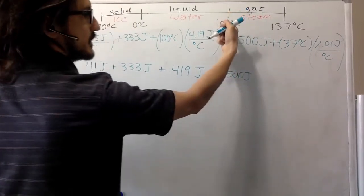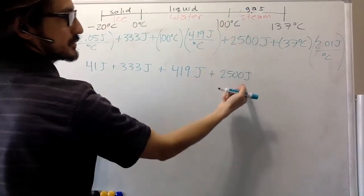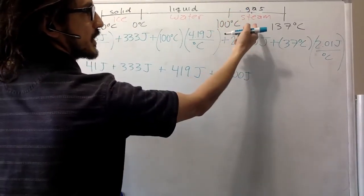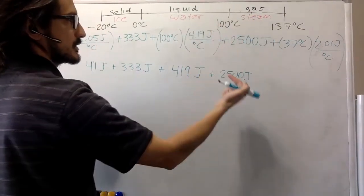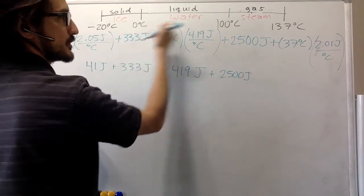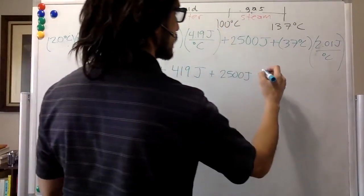Plus 2,500 joules. So you can see how it requires much more energy to make it a gas than to let it go from 0 to 100 Celsius. So good for cooking.